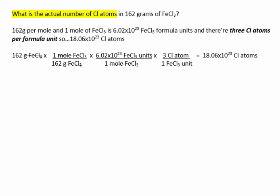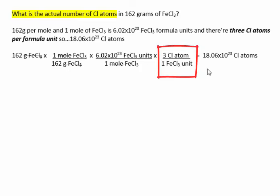What if you're asked how many chlorine atoms are in 162 grams of iron(III) chloride? For each formula unit of iron(III) chloride, there are three chlorine atoms. The calculation starts the same way — 162 divided by 162 times 6.02 times 10 to the 23rd — then we account for the ratio of three chlorine atoms per one formula unit. So the answer is 3 times 6.02 times 10 to the 23rd, or 18.06 times 10 to the 23rd.